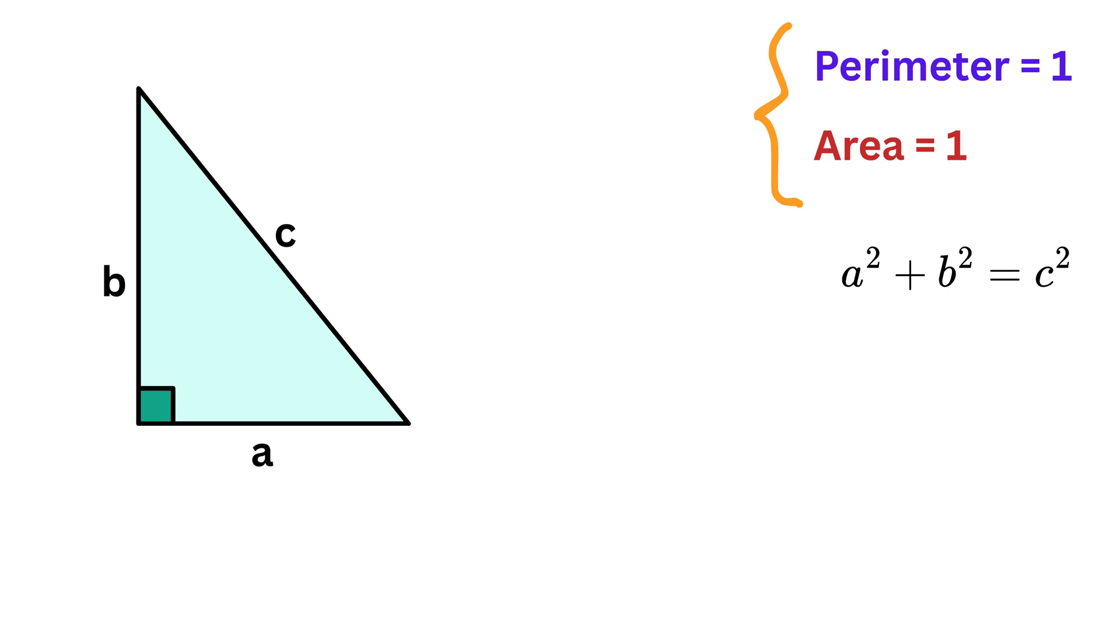Now we are given two conditions. The first is that the perimeter of this triangle is one, which means A plus B plus C is equal to one.